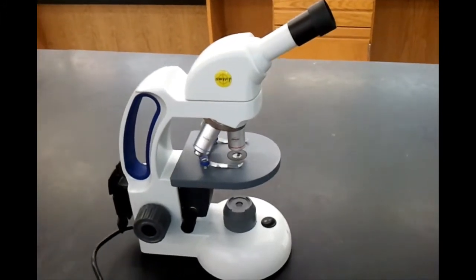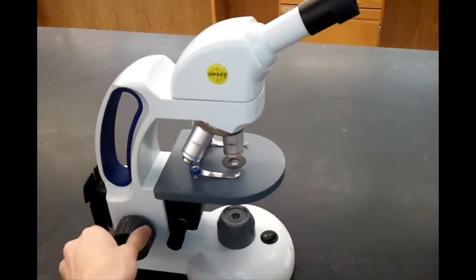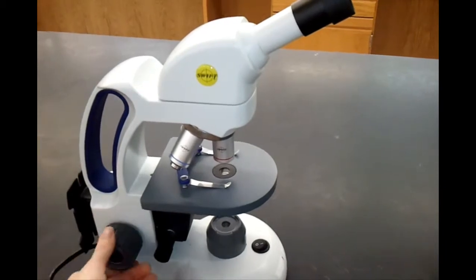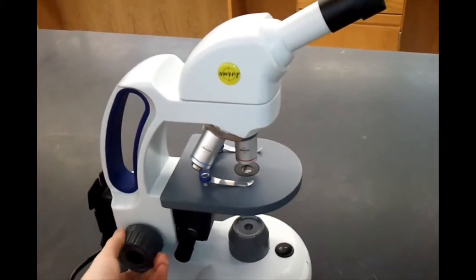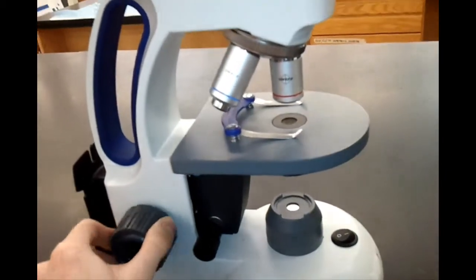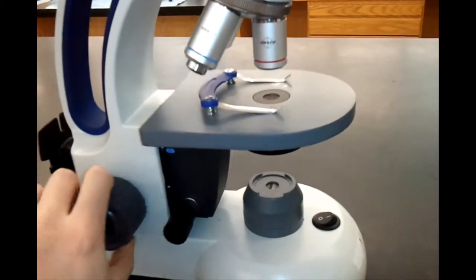In order to bring an image into focus, you would use the coarse and fine adjustment knobs on the side of the microscope. The larger knob is the coarse adjustment knob, and you can see that it moves the stage up and down to bring the image into focus.